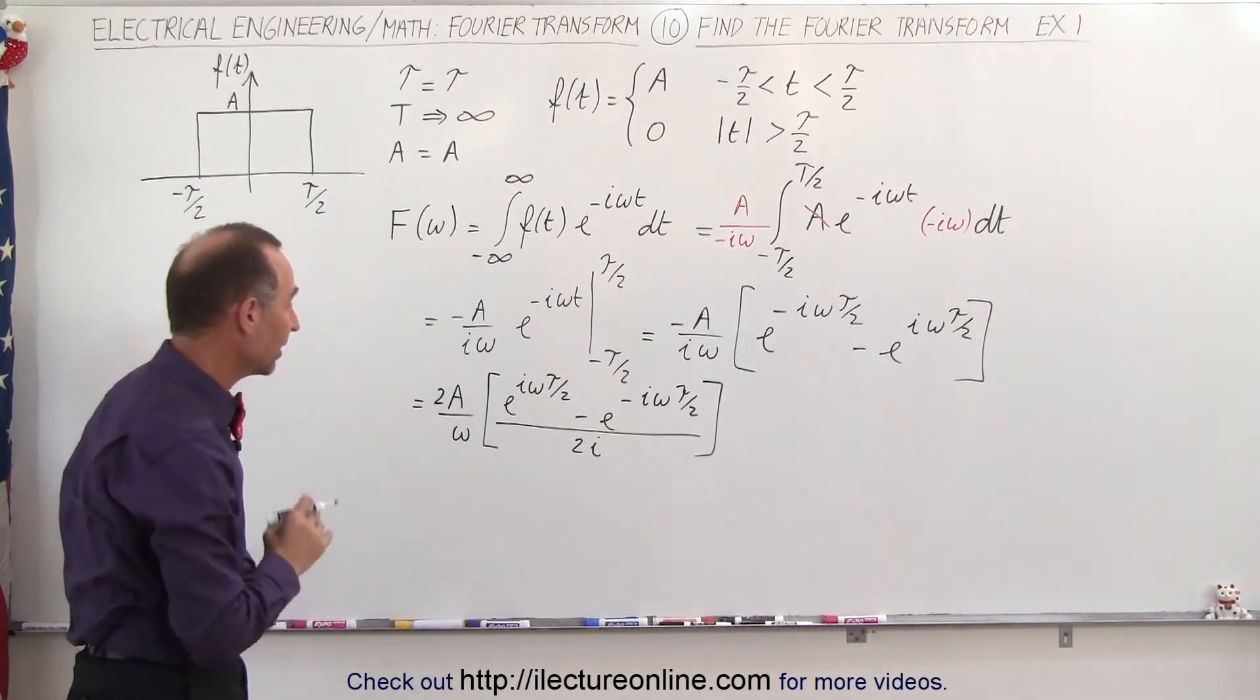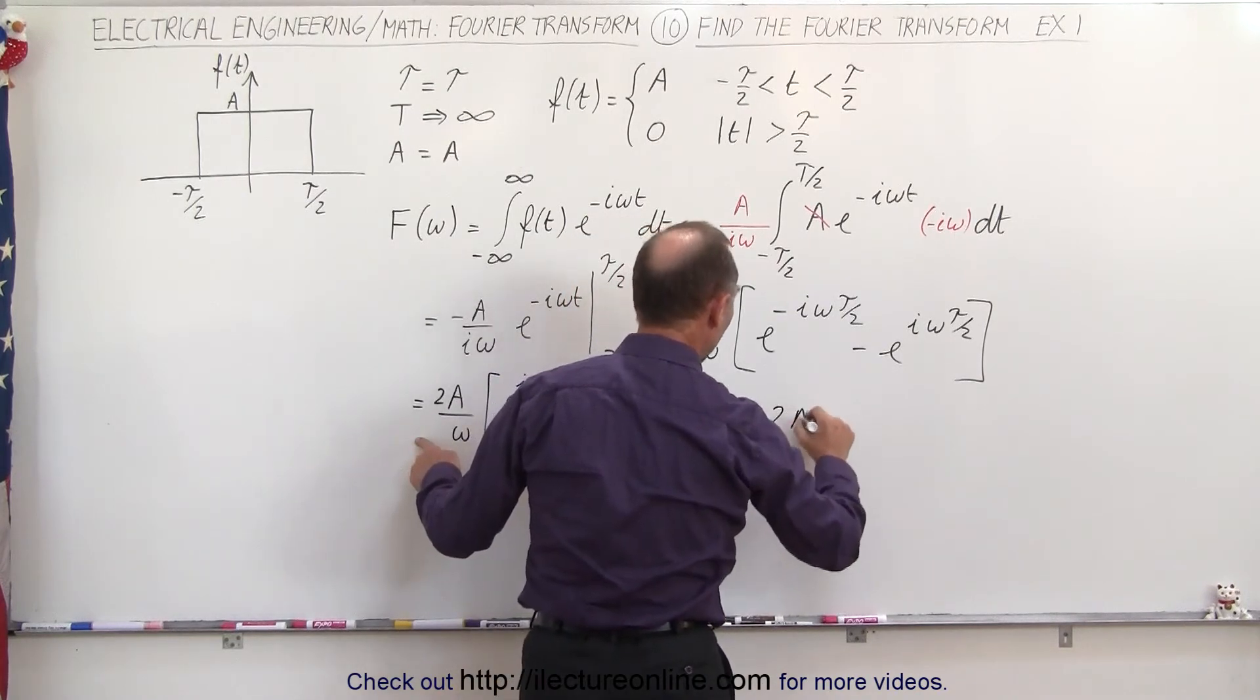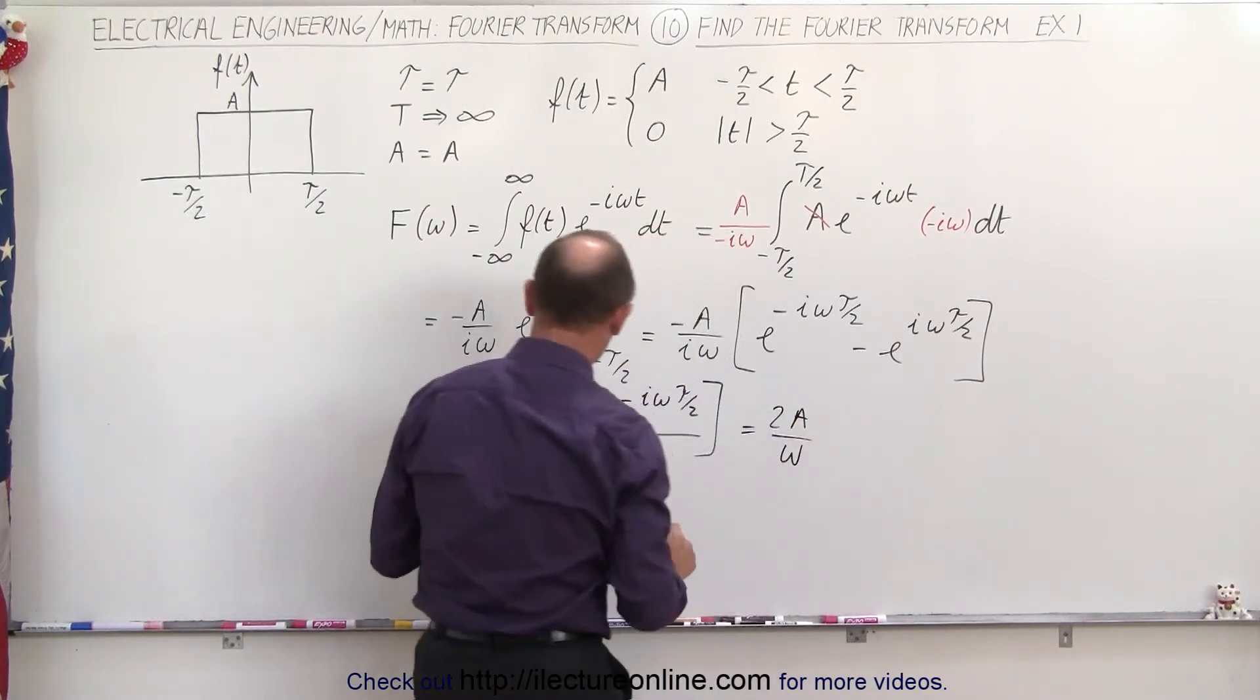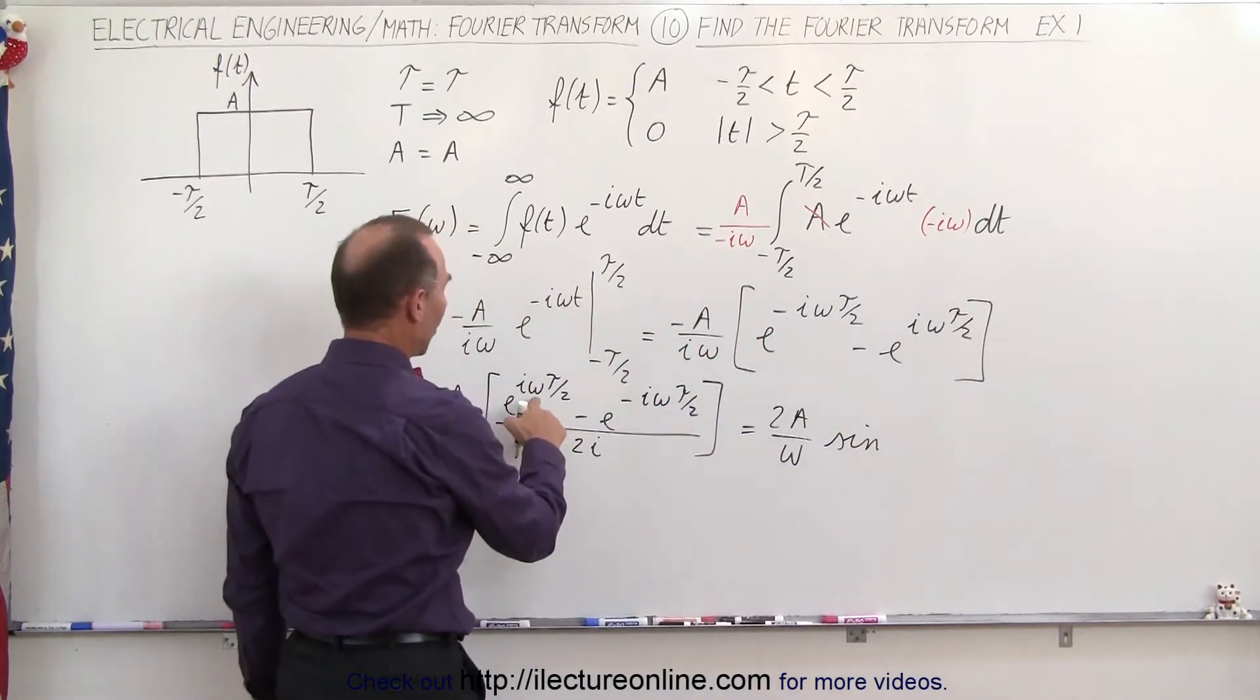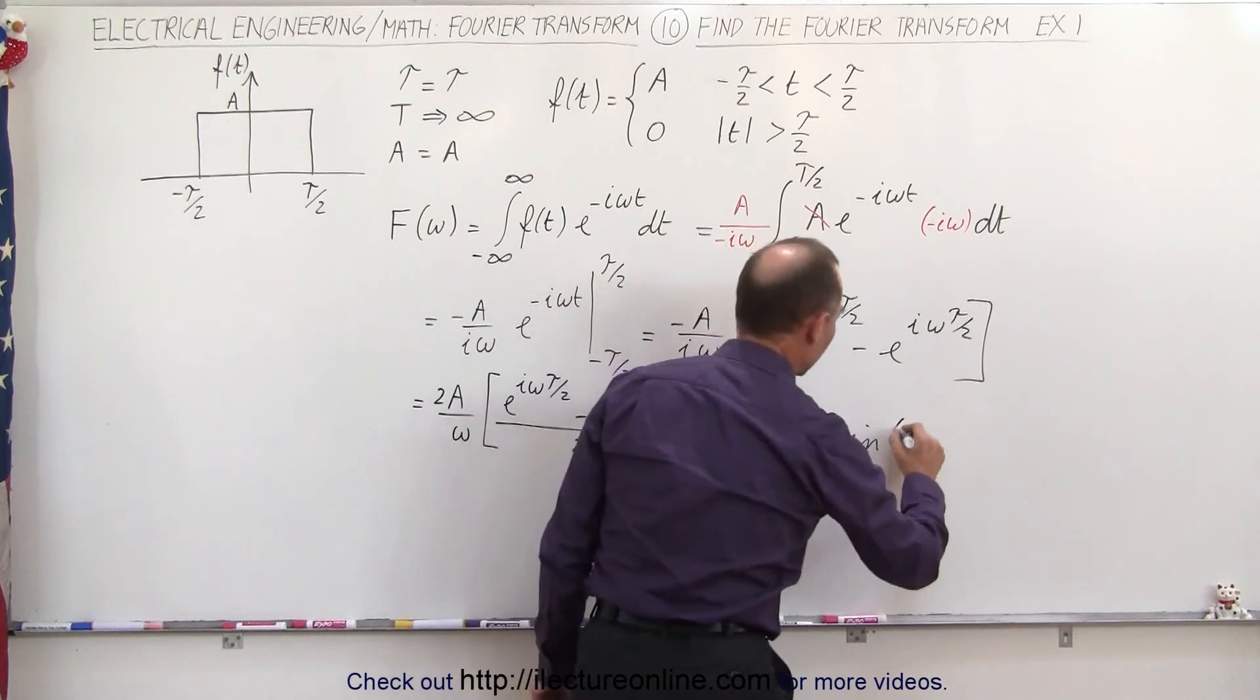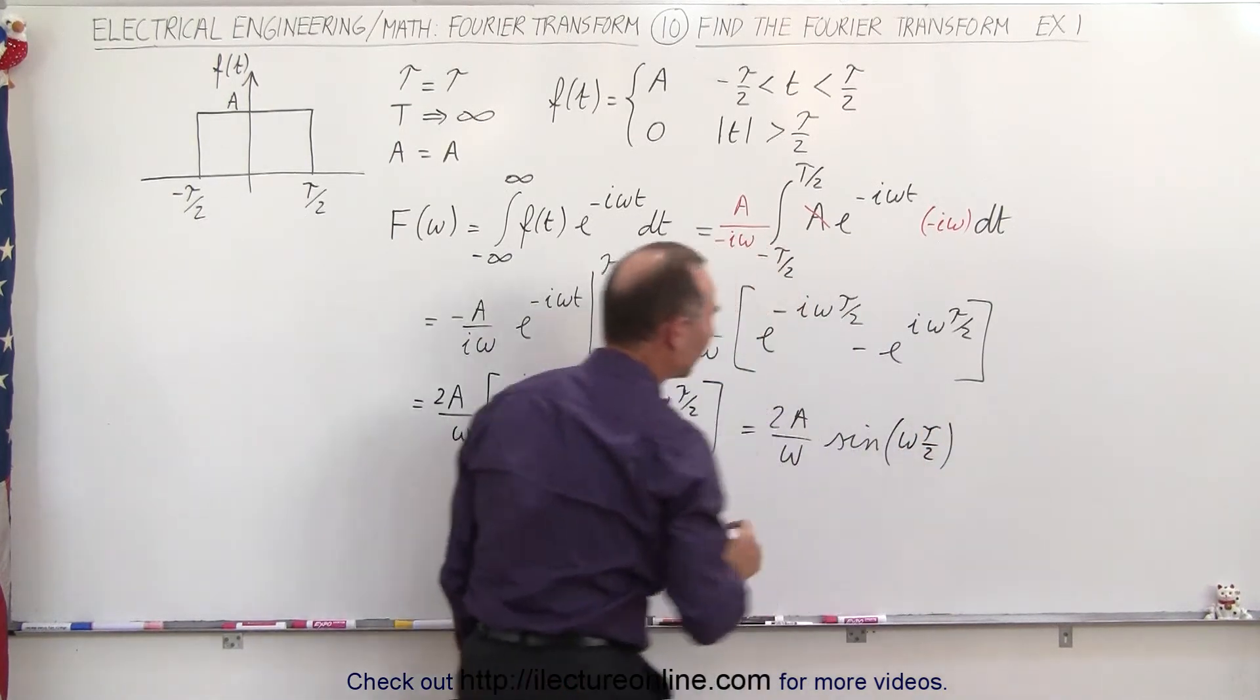So now this quantity right here can be now transformed into the function called the sine, so this can now be written as 2A over omega times the sine of omega times tau over 2.